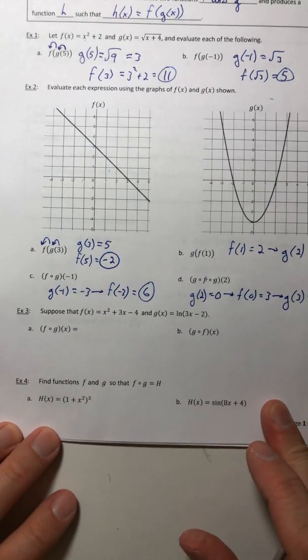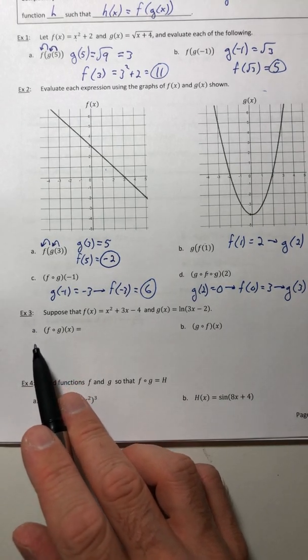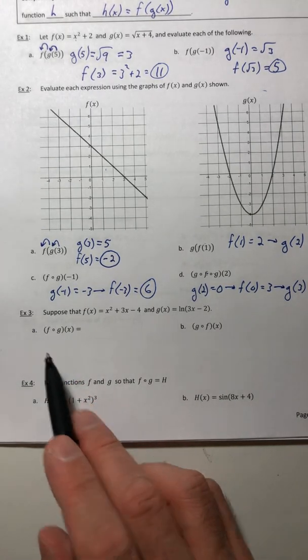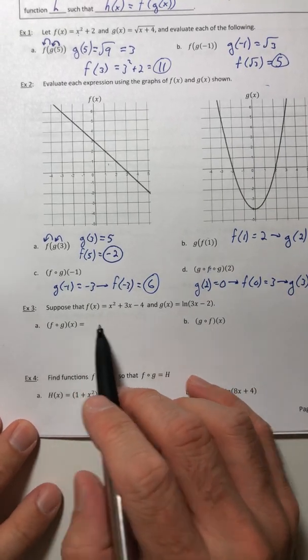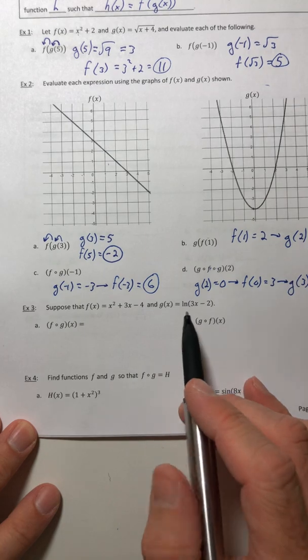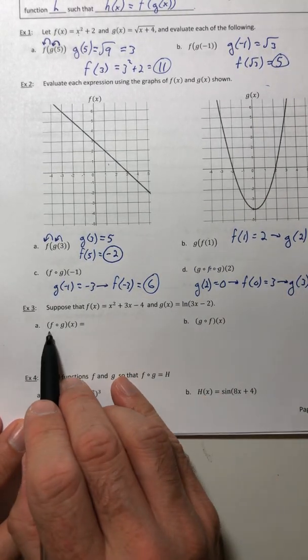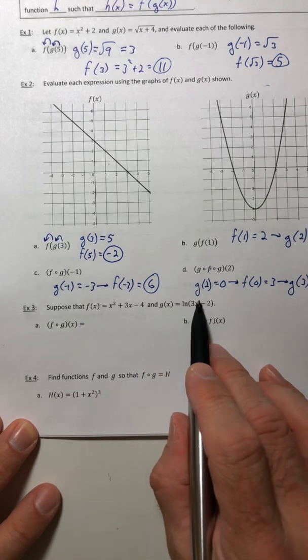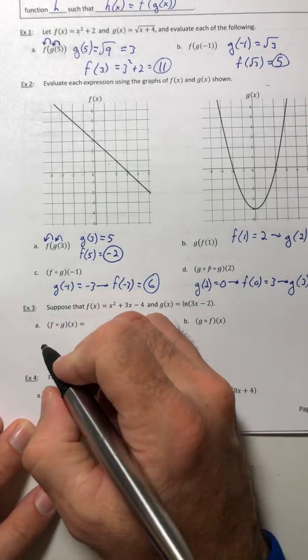That's how you can use a graph. The next example three, we're not going to calculate a value, we're actually going to figure out what the composite function is as a function itself. So instead of plugging in a value, now we're going to plug in the whole entire function.